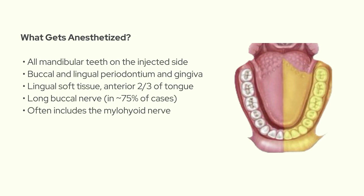One thing to keep in mind is the buccal soft tissue over the molars — it's kind of inconsistent. In most cases, around 75% of the time it does get numb, but the buccal nerve is super variable in its path, so you should always double check that area before starting any work. There's also a cool bonus with the Gow-Gates: it often catches the mylohyoid nerve too, which is helpful because in some patients that nerve can supply part of the mandibular first molar. So if you're using other blocks and missing it, that can definitely mess with your anesthesia.